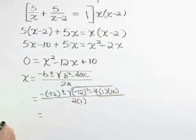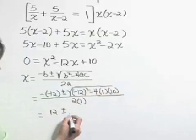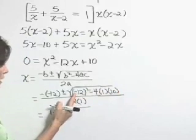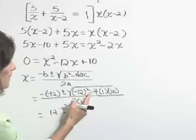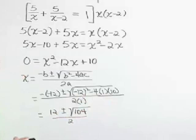This gives us 12 plus or minus, underneath that radical, we've got 144 minus 40. That's 104 all over 2.